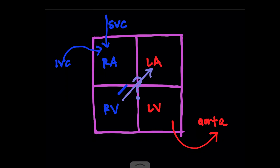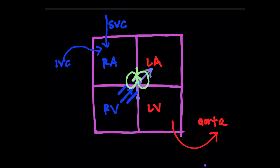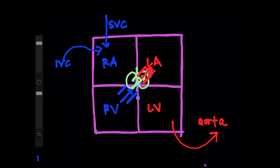The way that the blood gets out of the RV and into the lungs is through what's called the pulmonary artery. From there, the blood travels into the lungs, into the capillary bed, and that's where everything gets oxygenated. Then all that oxygenated blood dumps into the pulmonary veins, and the pulmonary veins dump back into the left atrium.